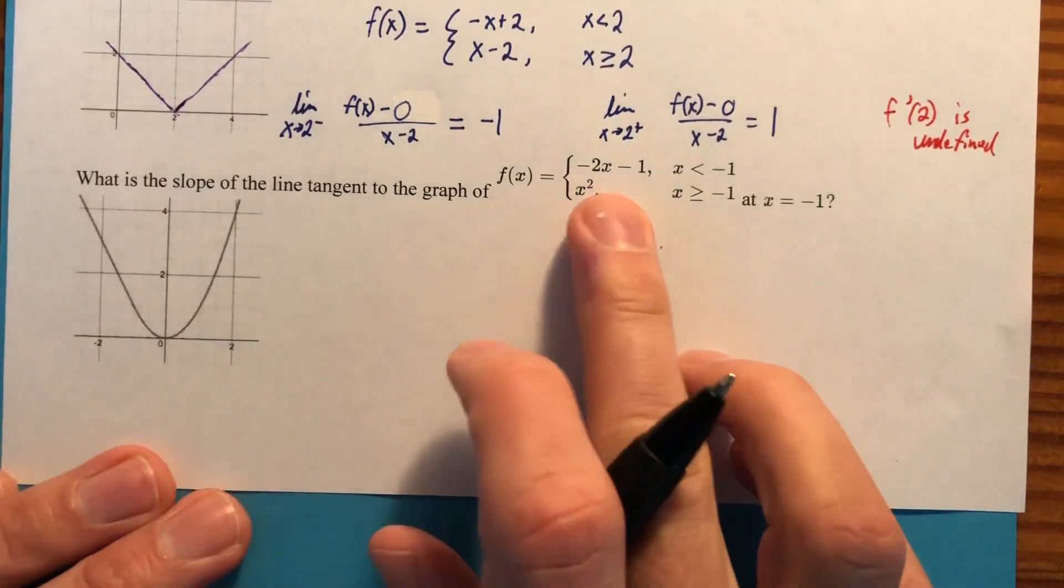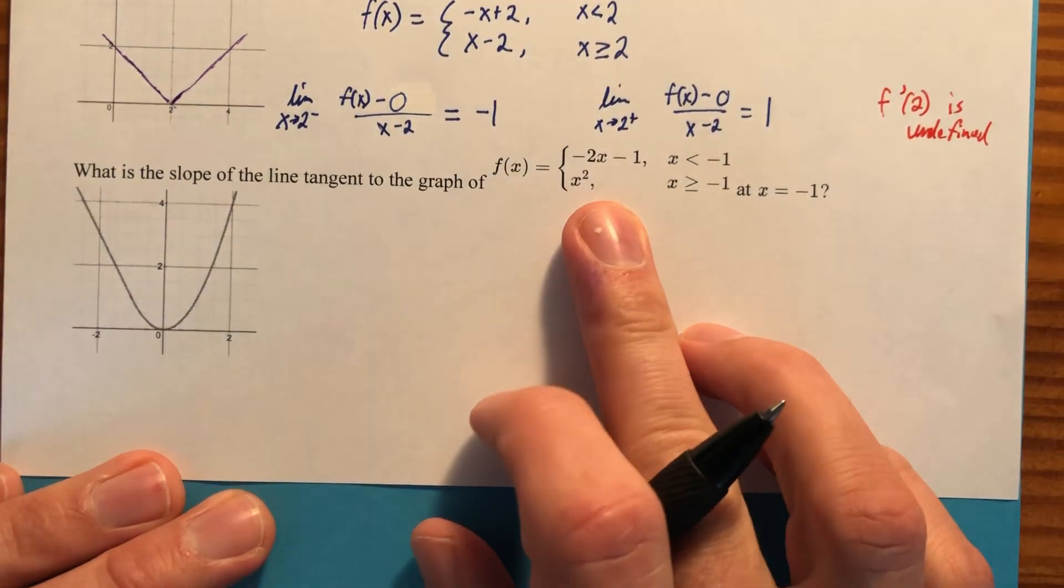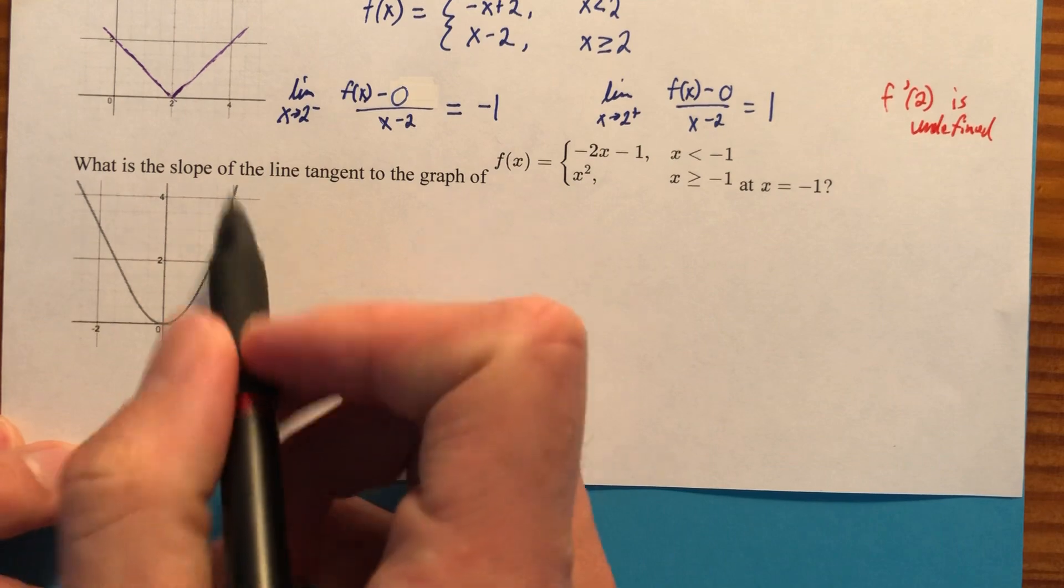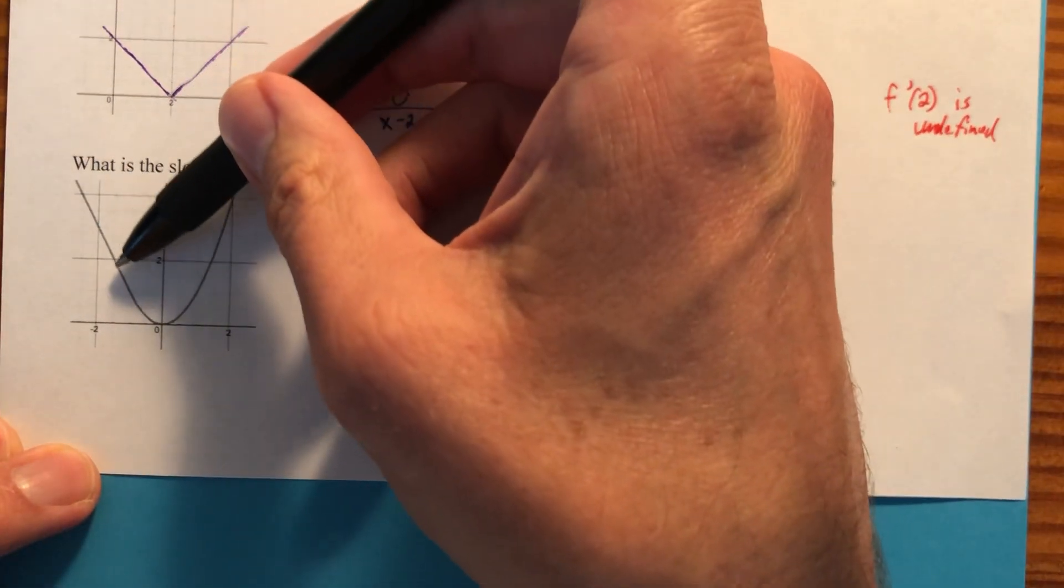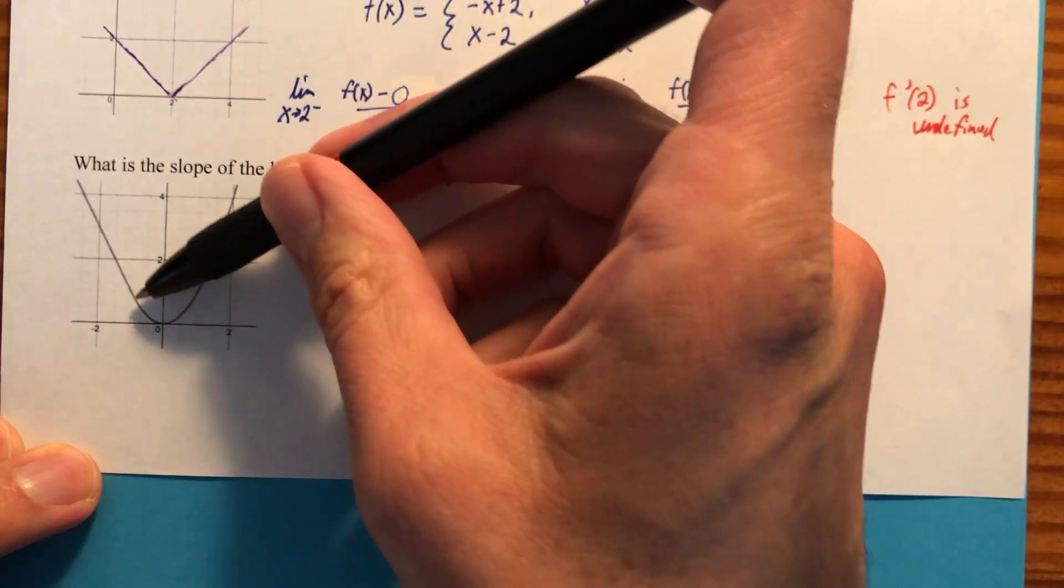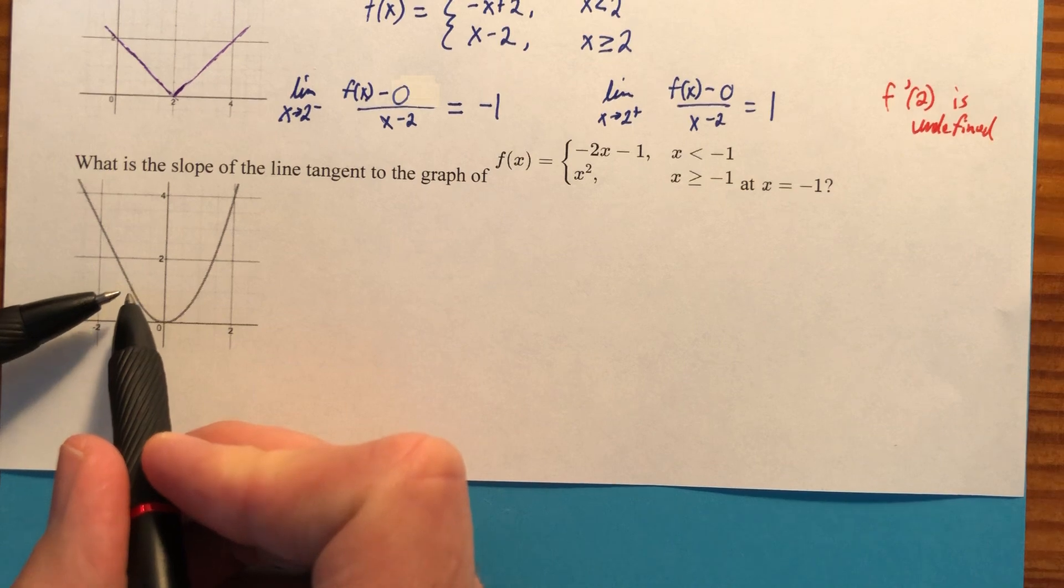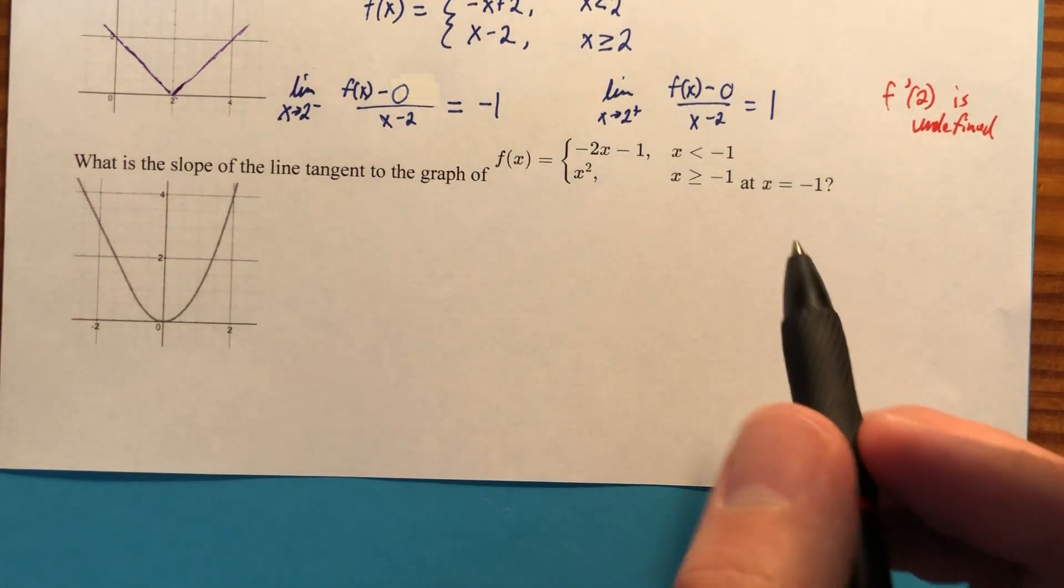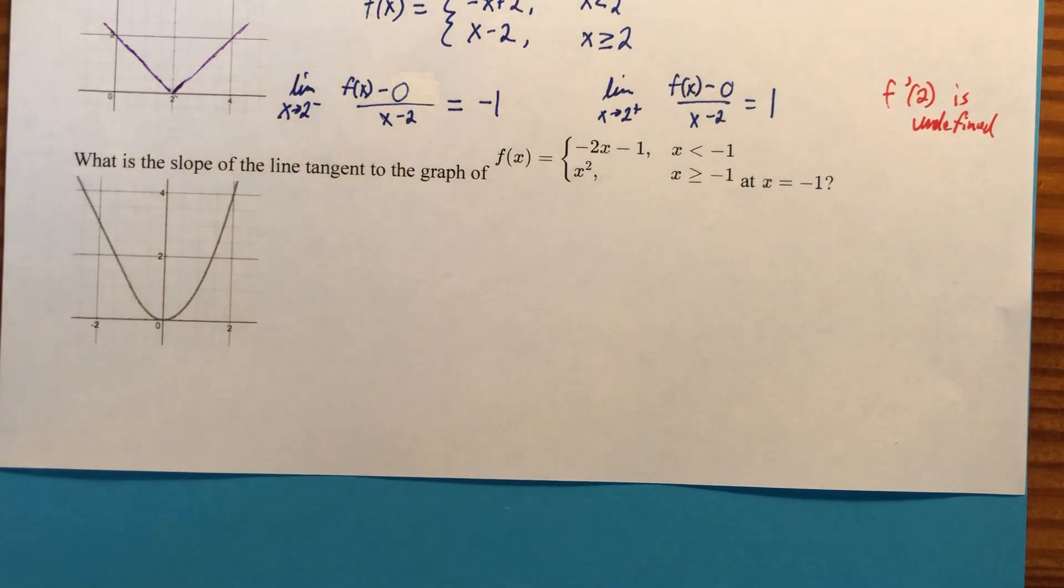What's the slope of the line tangent to this graph at x equals negative one? Well, we do have a piecewise function, but this one seems to flow a little more smoothly. So I wonder if the slope coming in from this side and the slope coming in from this side match up. I'm not asking, is the function continuous? Yeah, it is. But what I'm really asking is, do they have the same slope coming in? And we're going to have to figure that out and we'll use green.